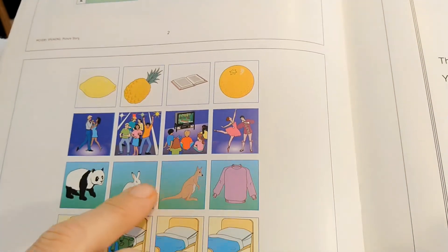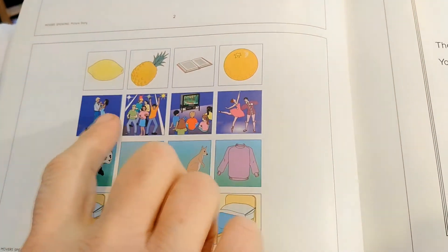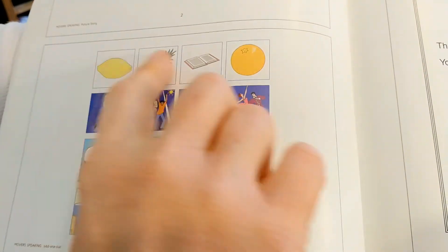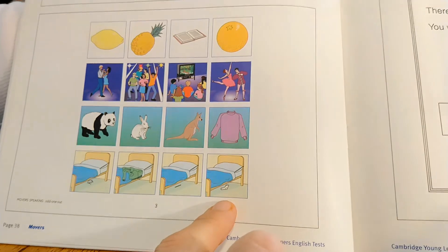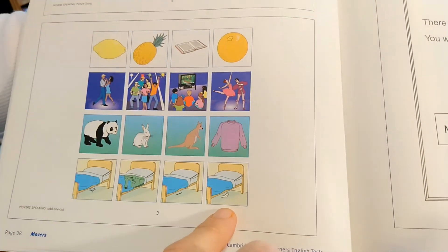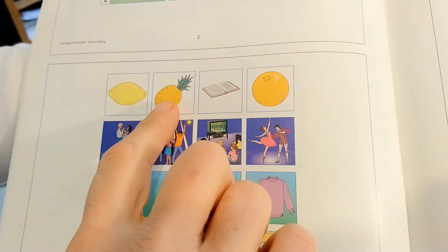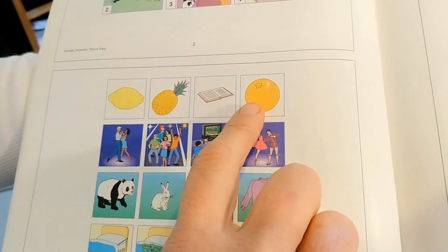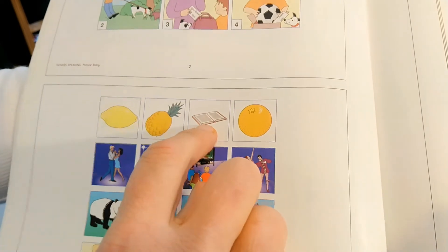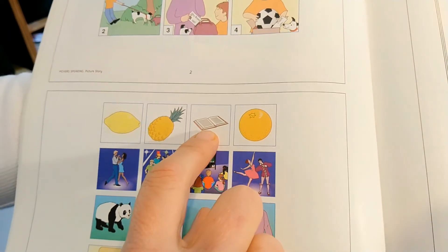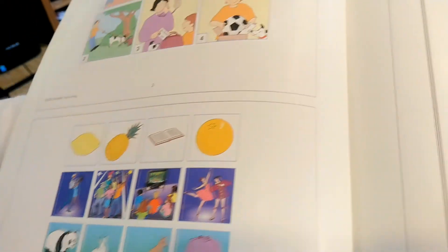And in this part of the speaking, you have a series of pictures and you have to find the odd one out. The one that doesn't belong to the group. For example, you have a lemon, a pineapple, a book, and an orange, which is the one that doesn't belong to the group. Of course, the book, because you cannot eat a book.